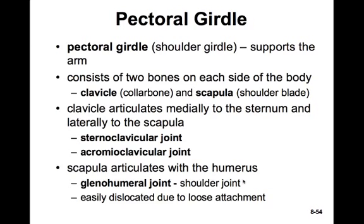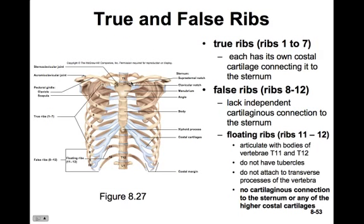The pectoral girdle consists of just two bones on each side of the body: the clavicle, or the collarbone, and the scapula, which is commonly known as the shoulder blade. The clavicle articulates medially to the sternum and laterally to the scapula. We'll have on one end the sternoclavicular joint and on the other end the acromioclavicular joint.